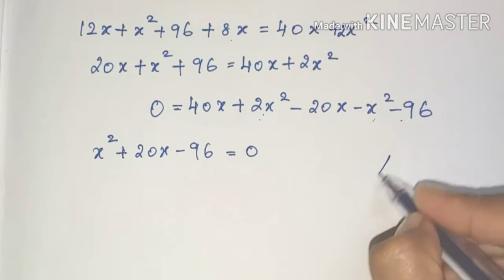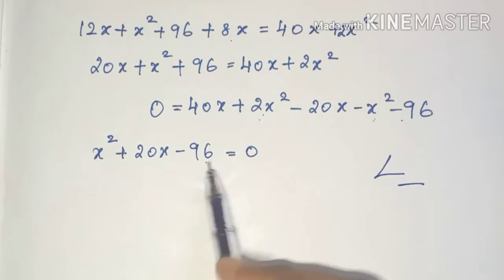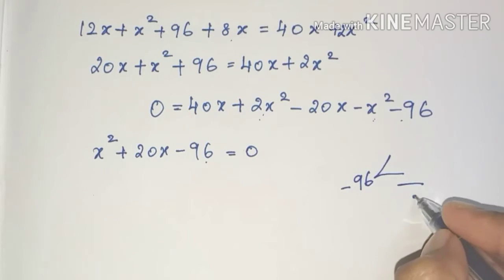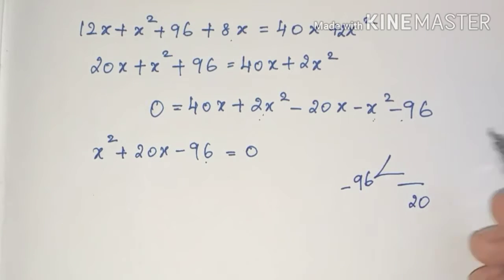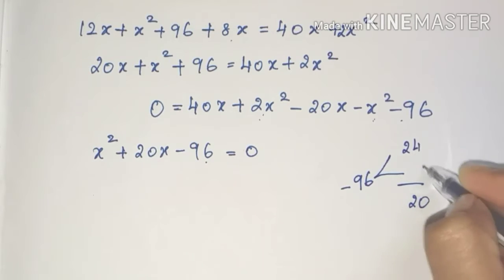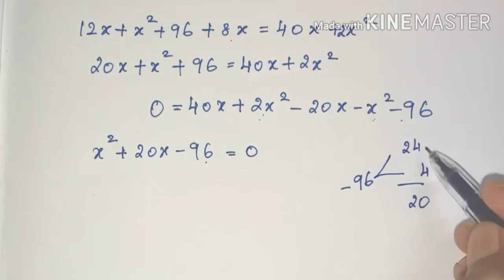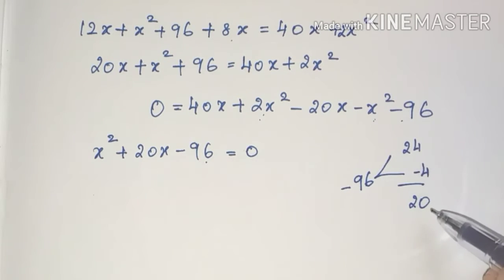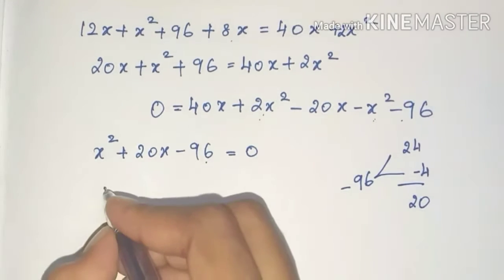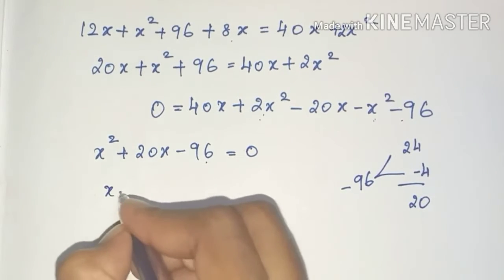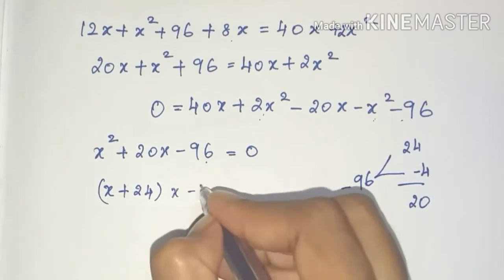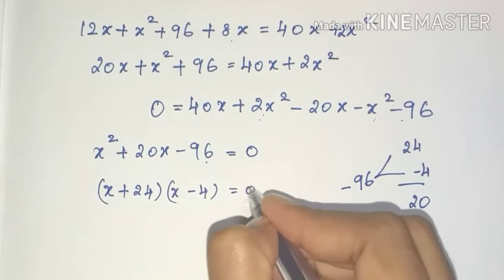I will solve using the sum-product method. The constant term is minus 96. We need two numbers that multiply to 96 and add to 20: that is 24 and 4. So the equation factors as (x + 24)(x − 4) = 0.